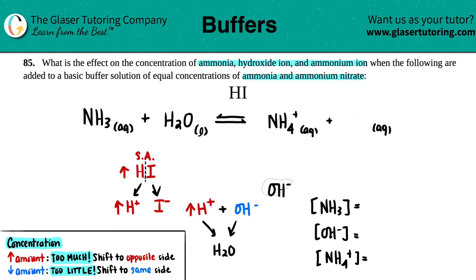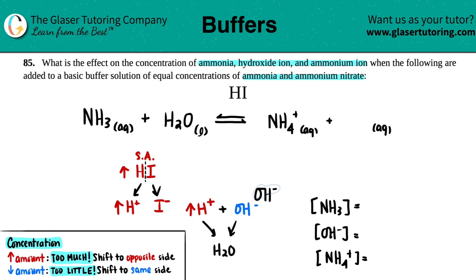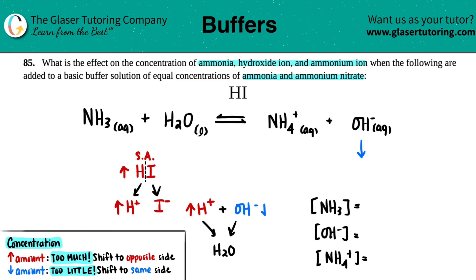What's going to start happening to the OH⁻ in the NH3 equation if the OH⁻ is going somewhere else? Once it's taken away, you don't have it in the equation anymore. So the OH⁻ is going to decrease — you're stripping it away so it can combine with the H⁺ to form water. So we know that the hydroxide ion concentration is going to decrease.